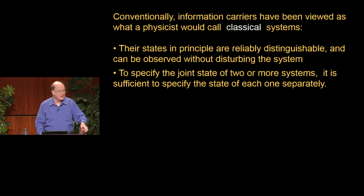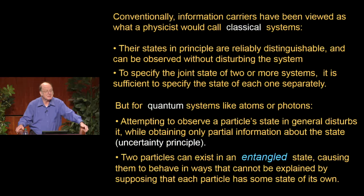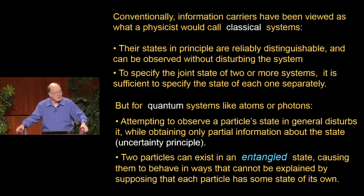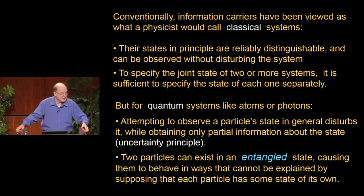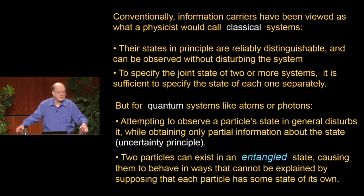Those ideas were already known to be not right in the early 20th century, in the context of physicists studying atoms, electrons, and photons. They found that attempting to observe the state of a particle will in general disturb it, and only obtain partial information about what the state was before you disturbed it. That's generally called the uncertainty principle. They also found that two particles can exist in an entangled state in which they behave in ways that can't be explained by supposing each particle had some state of its own.